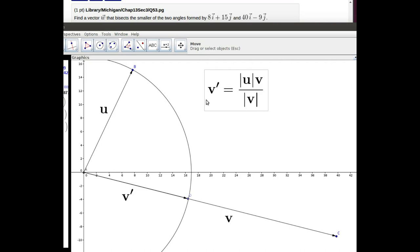So here's the secret for finding v prime. If we took v and divided it by the length of v that would give us a unit vector in the direction of v. Then if we multiplied all of that by the length of u that would give us a vector that's the same length of u but going in the direction of v.